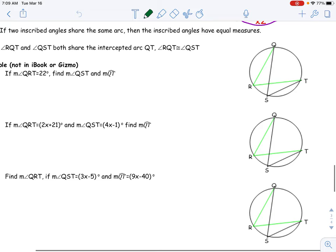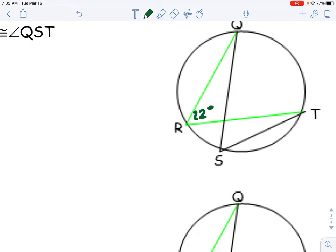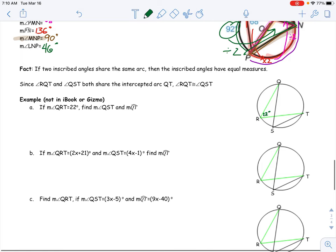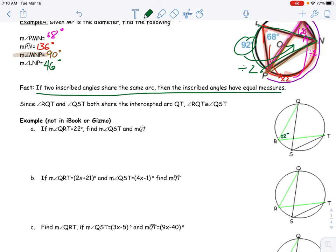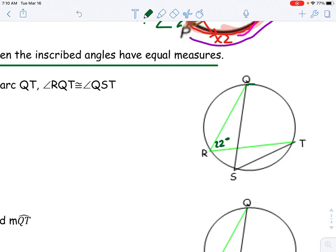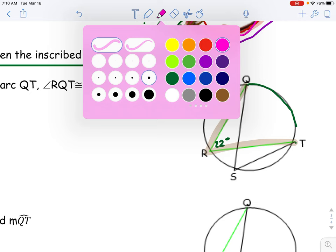Alright, let's go ahead and knock out these last few problems. We've got angle QRT, which is 22 degrees, so let's find the measure of angle QST. Remember this fact: if two inscribed angles share the same arc, then the inscribed angles have equal measures. Notice how both these angles have the same intercepted arc.